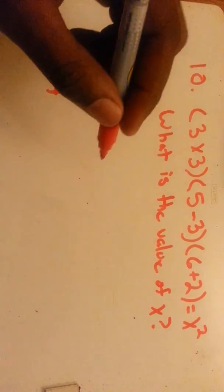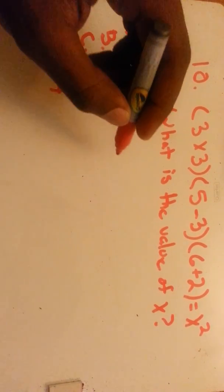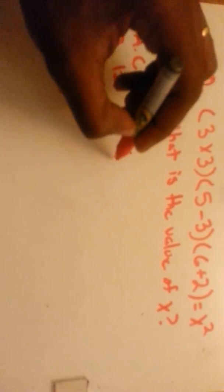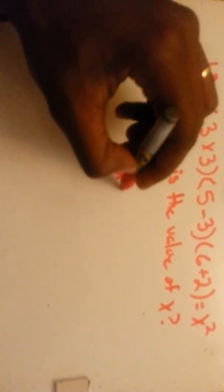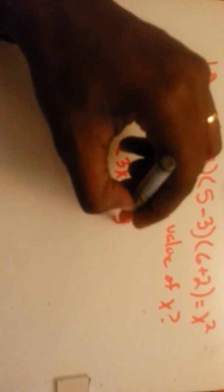So for this one, it's pretty simple. Let me rewrite it down here. 3x times 3, 5 minus 3, 6 plus 2 equals x squared.